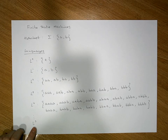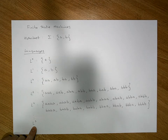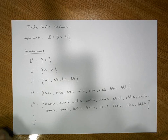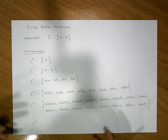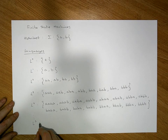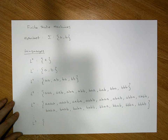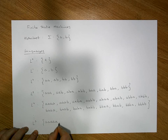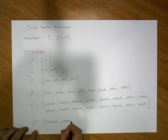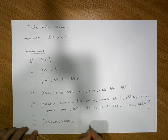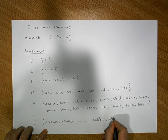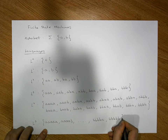We can continue in this fashion, building larger and larger languages. For L5, all words of five characters, we take L4 and concatenate A or B onto each word, giving all possibilities from AAAAA through to BBBBB. And so on and so forth.